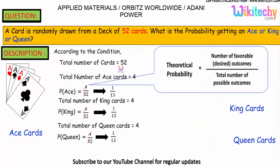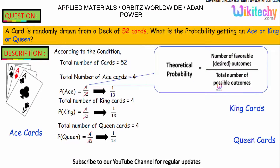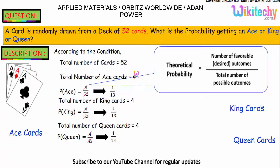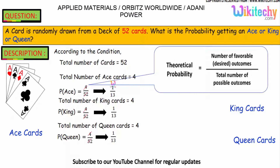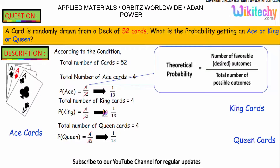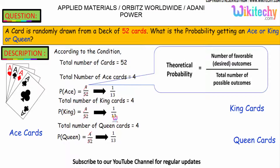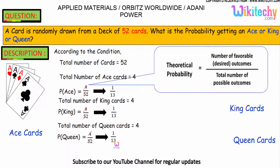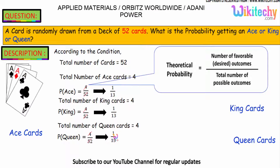The total number of cards is 52. Probability is the number of favorable outcomes divided by the total number of possible outcomes. The total number of ace cards is 4, so 4 divided by 52 — probability of ace is 1/13. The total number of king cards is 4, so probability of king is 1/13. The queen cards are also 4, so probability of queen is 4/52, which is 1/13.